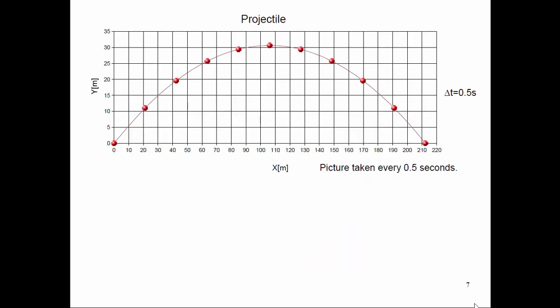Let's consider taking a baseball and tossing it from the ground and having it land some distance away. We'll take a picture every half a second of the baseball, and graph the Y position versus the X position for all of these pictures. The X axis is the X position, and the Y axis is the height — the Y position.